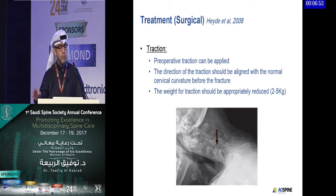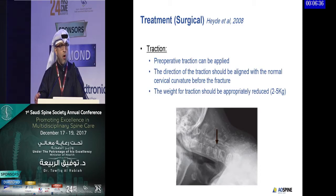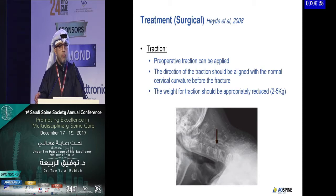Preoperative traction can be applied as mentioned in the literature, but attention must be paid to the direction of traction, which should be aligned with the normal cervical curvature before the fracture — not where it currently sits, but where it was before the injury. The weight of traction should be appropriately reduced; the range used in the literature is between two and five kilograms, no more.